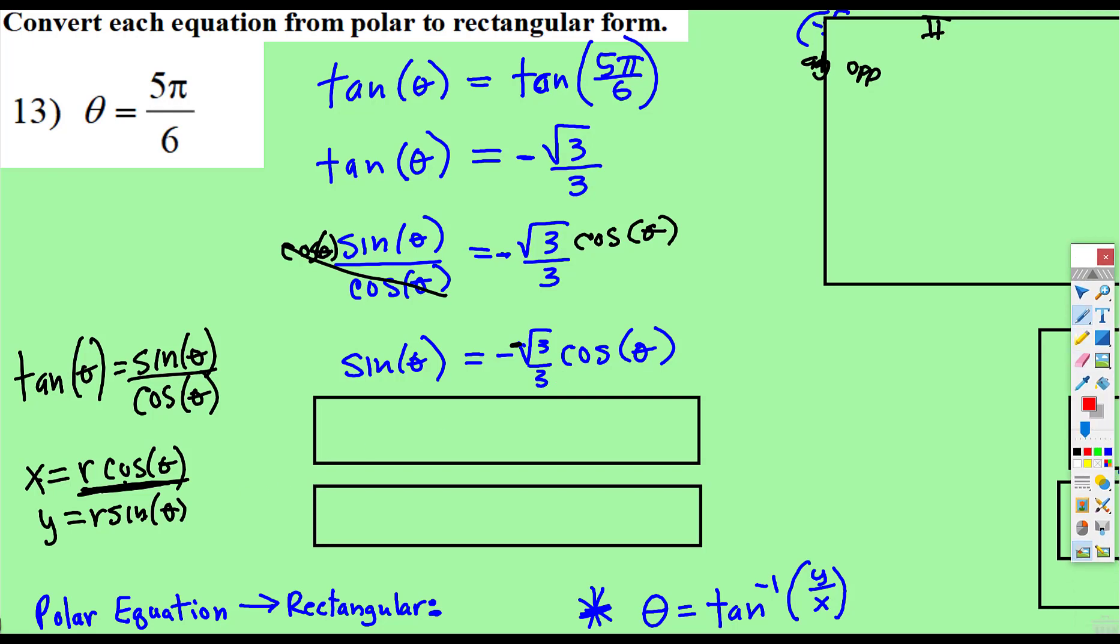equality properties, if you do something to the left side to keep things equal, so I'm just going to multiply r to both sides. Now look at what I have.